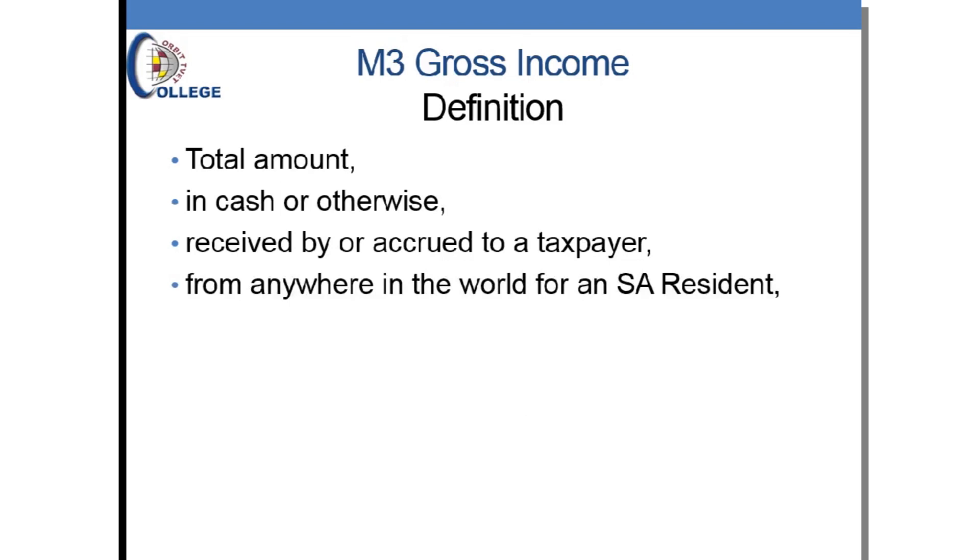The next component is 'in cash or otherwise.' There is a reason they use the word 'otherwise.' Previously, gross income was only based on whether a person received money. But in other industries, people were being paid with stock, assets, or free or cheap services. So the taxman decided to include this in your income as if you received it in cash.